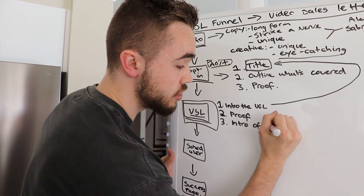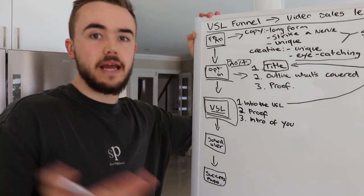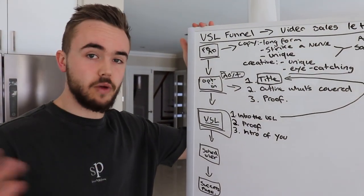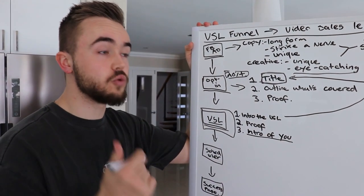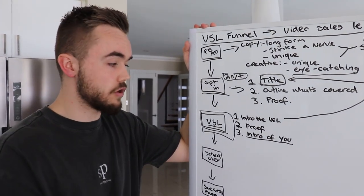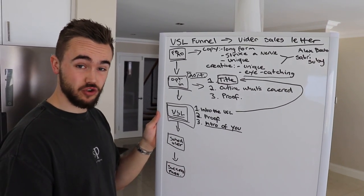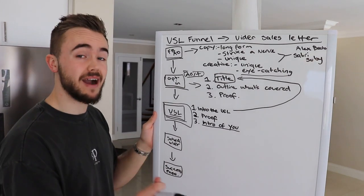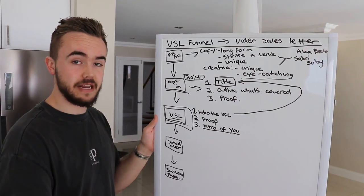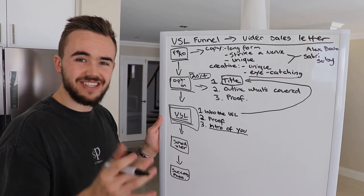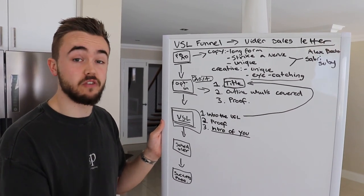Section three: do an intro of yourself — who you are, what you do, similar to email outreach where you say 'my name is Kai Bax, I'm the founder of Bax Consulting, we do X, Y, and Z.' Get them familiar with you, do a bit of humor, get them comfortable. Then tell them a little bit about your story — that's super powerful because it lets you resonate and connect with them on a deeper level. They don't just look at you as a business owner; they look at you as a person, which can help conversion rates a lot.